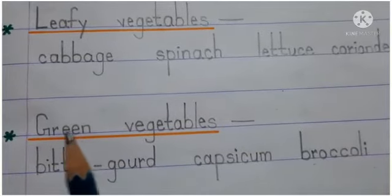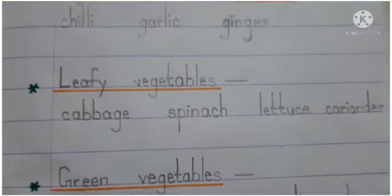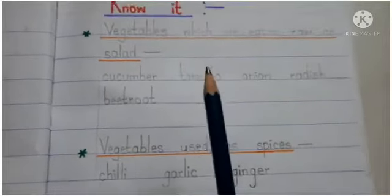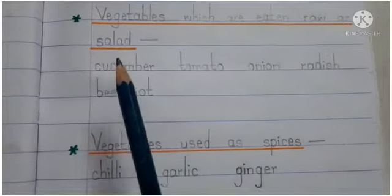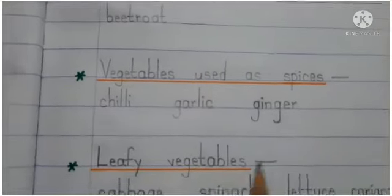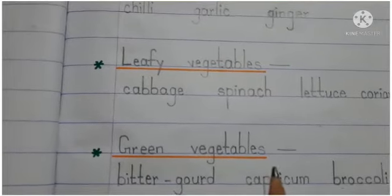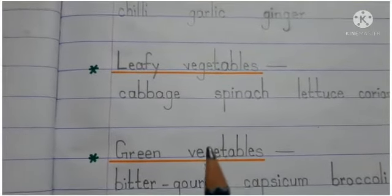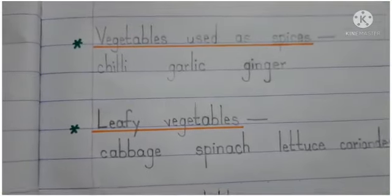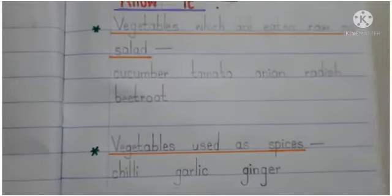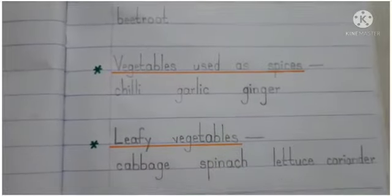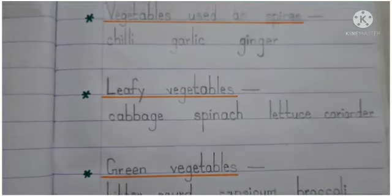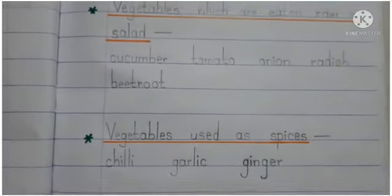Now let's see which vegetables are at your home. When you go to the vegetable market, you can see different types of vegetables — those eaten raw as salad, used as spices, leafy vegetables, and green vegetables. Today your homework is to write all these vegetable names in your copy with correct spellings, and then learn them with their meanings.